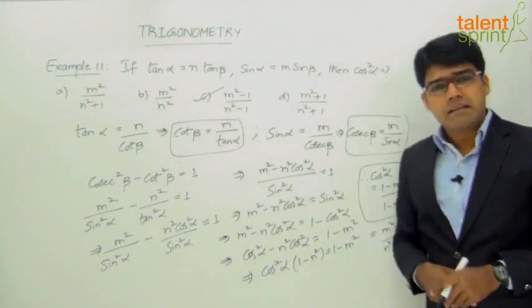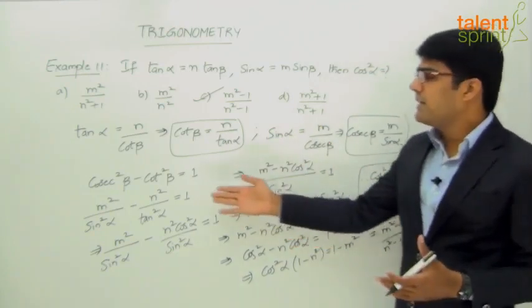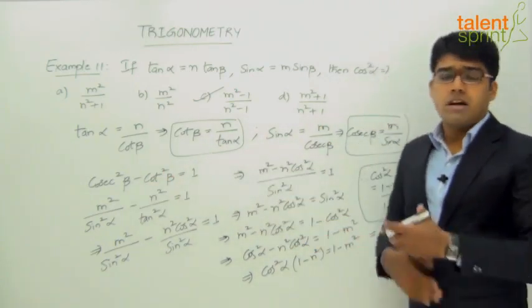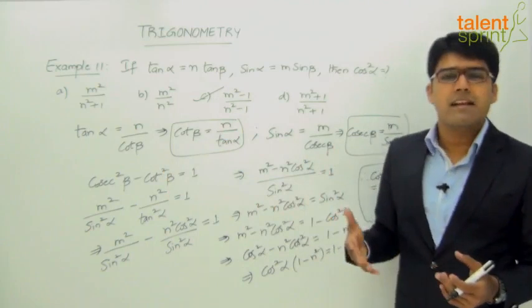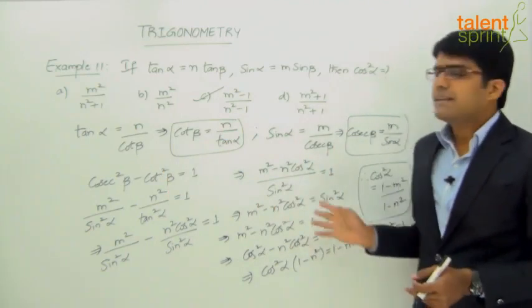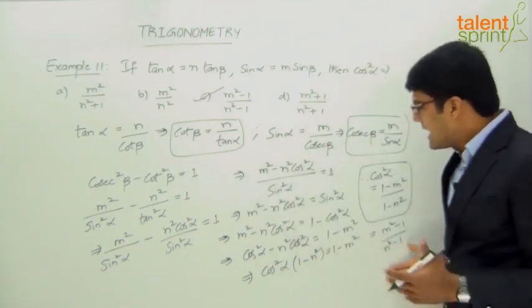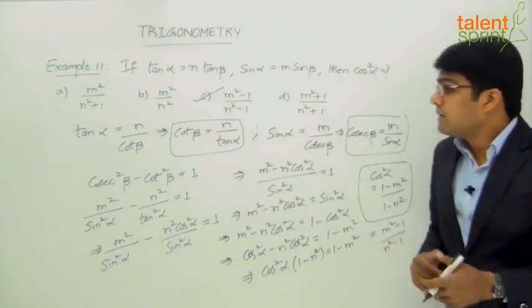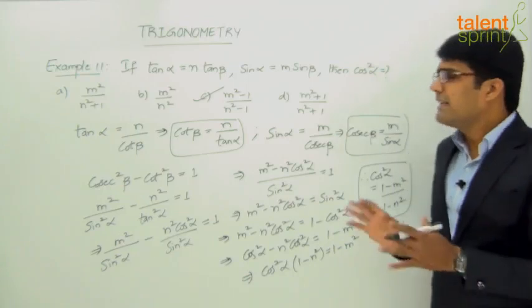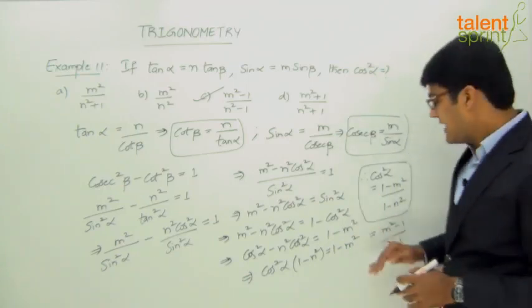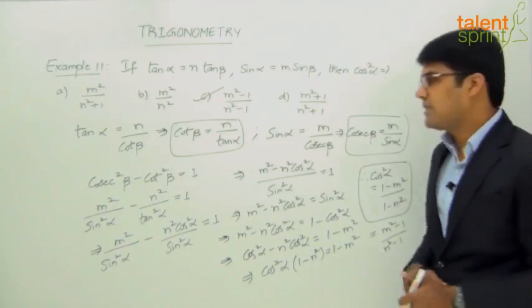That is how, by following the regular method, we arrive at the required answer. There may be different ways of solving it — using cosec²β - cot²β = 1 or sec²β - tan²β = 1 or other trigonometric identities. However, whatever method we follow, we end up wasting a lot of time. Even with a direct solution, it easily takes about 1 minute in the exam. So this is clearly not the best way.